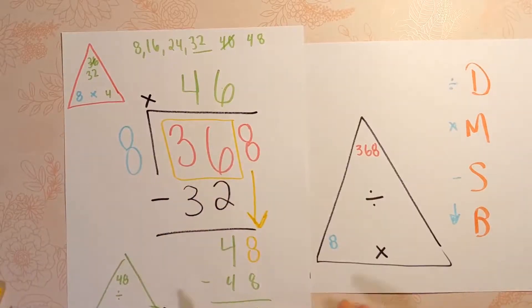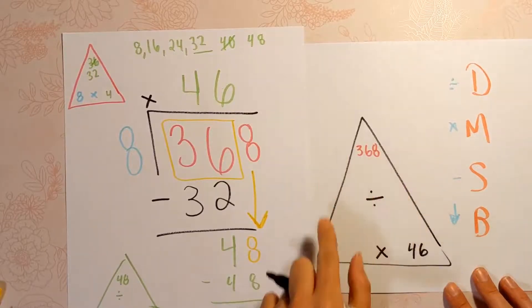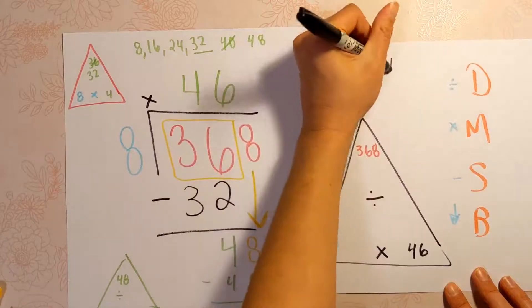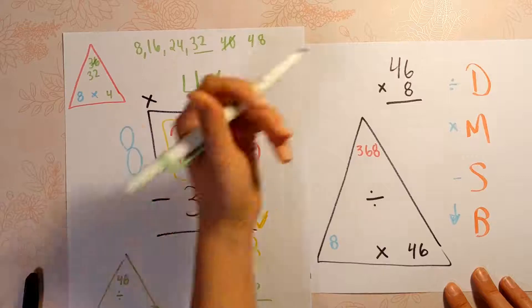368 can be divided by 8, and our answer is 46. Our quotient, I should say. Now, if we're saying 368 divided by 8 is 46, we are also claiming that 46 times 8 equals 368. So I need you to double check that with multiplication.